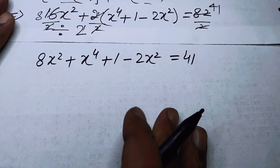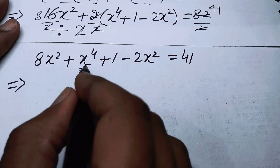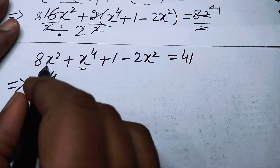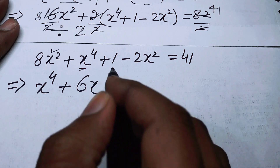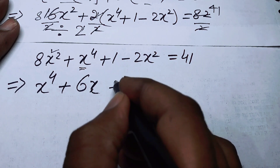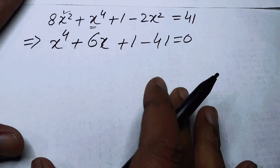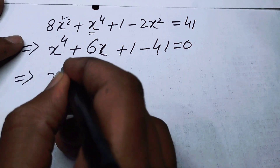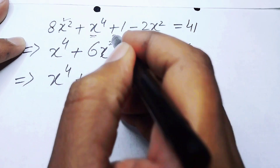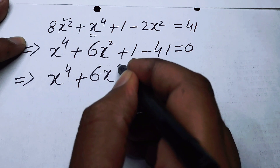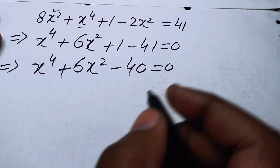We can make some simplification. Writing the highest exponent term first, we have X⁴, then 8X² - 2X² = 6X², plus 1 minus 41 = 0. Rearranging, we get X⁴ + 6X² - 40 = 0.